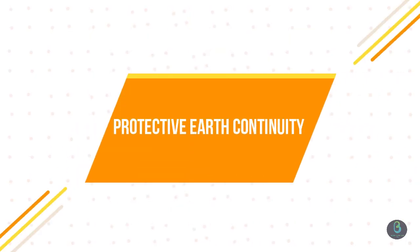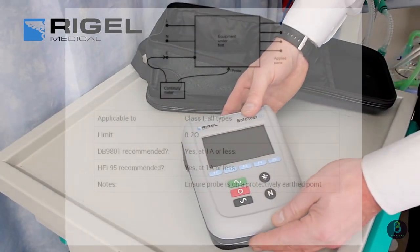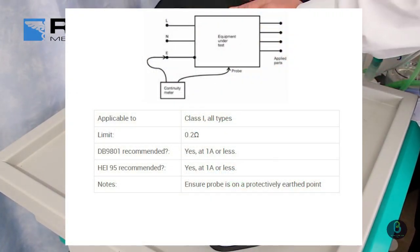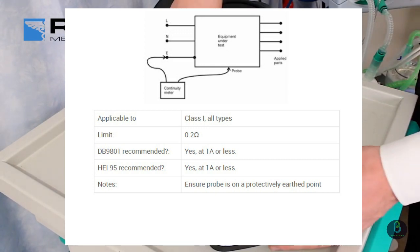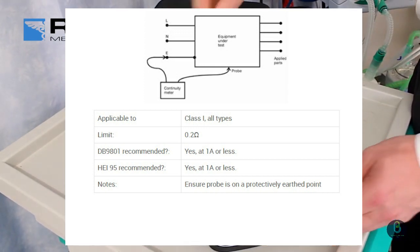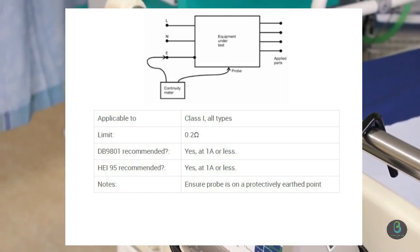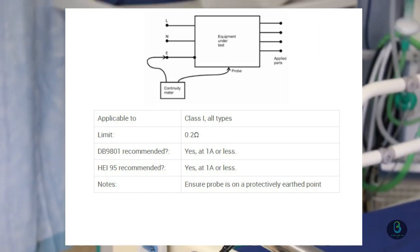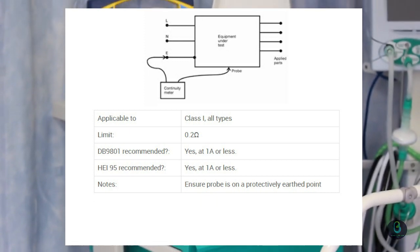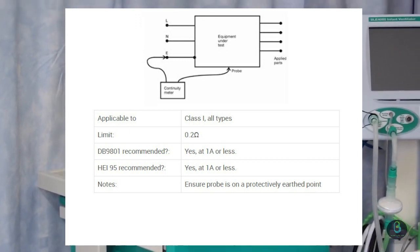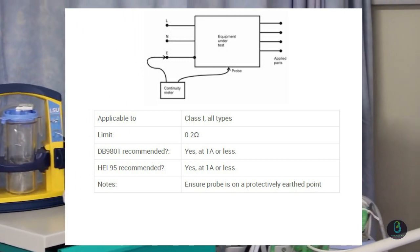Protective Earth Continuity. The resistance of the protective earth conductor is measured between the earth pin on the mains plug and a protectively earth point on the equipment enclosure. The reading should not normally exceed 0.2 ohms at any such point. The test is obviously only applicable to Class 1 equipment.